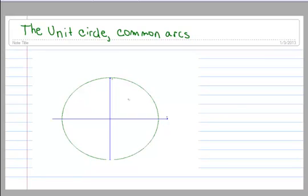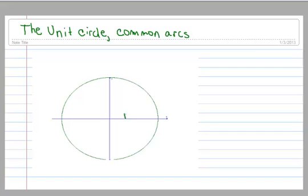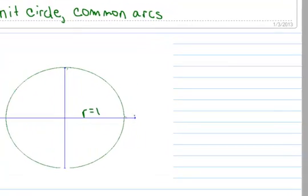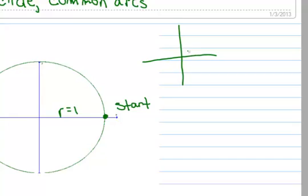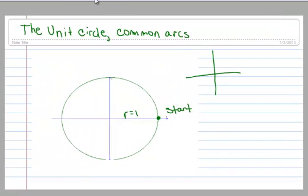So this is the circle, and it has a radius of 1, which makes it a unit circle. And when we start anything in trigonometry with the unit circle, this is always our start point right here. Just like when you graph things on the x-y coordinate plane, you always start at the origin right here.